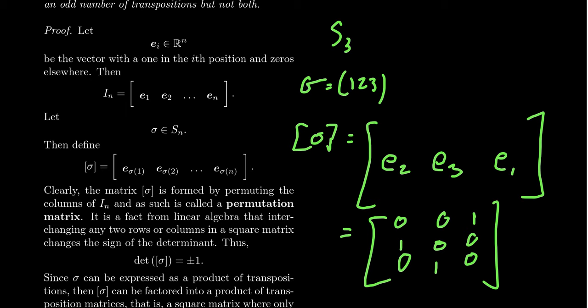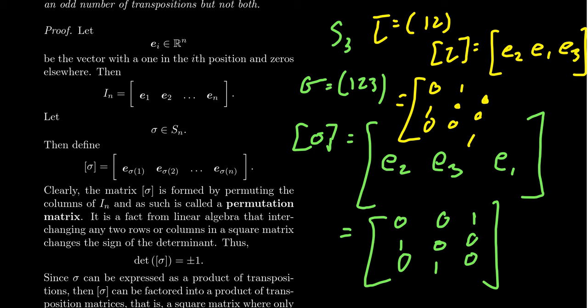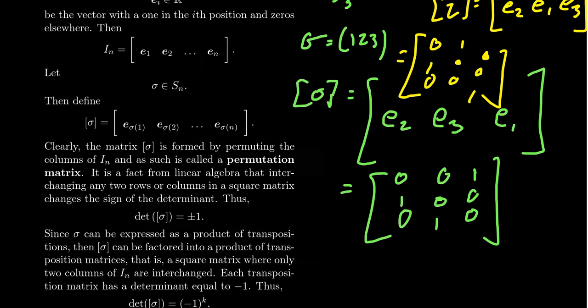Let's do another example. If tau is the 2-cycle (1 2), then the permutation matrix [tau] has first column e_2, second column e_1, and third column e_3 (left fixed). This gives the matrix with columns (0,1,0), (1,0,0), (0,0,1). Those are some examples of permutation matrices.